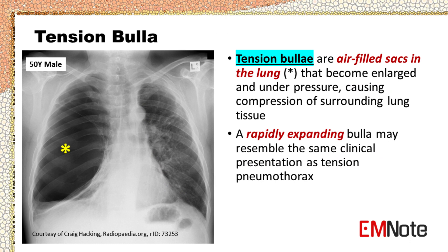Tension bullae are air-filled sacs in the lung that become enlarged and under pressure, causing compression of surrounding lung tissue. A rapidly expanding bulla may resemble the same clinical presentation as tension pneumothorax.